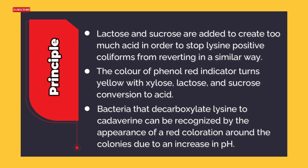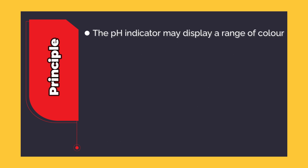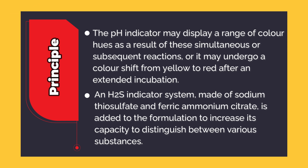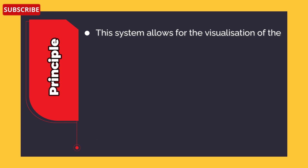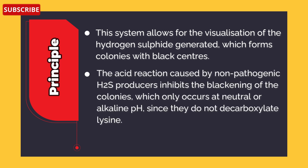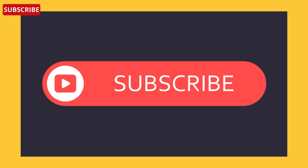Bacteria that decarboxylate lysine to cadaverine can be recognized by red coloration around the colonies due to an increase in pH. The pH indicator may display a range of color hues from these simultaneous reactions, or undergo a color shift from yellow to red after extended incubation. An H2S indicator system made of sodium thiosulfate and ferric ammonium citrate is added to distinguish between various substances, allowing visualization of hydrogen sulfide, which forms colonies with black centers. The acidic environment from non-pathogenic H2S producers inhibits blackening, which only occurs at neutral or alkaline pH.